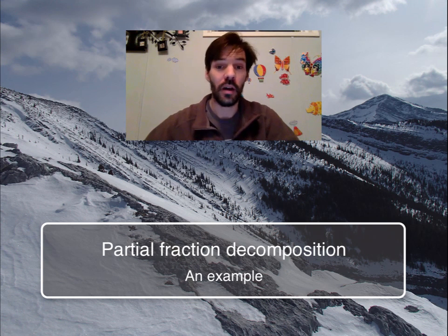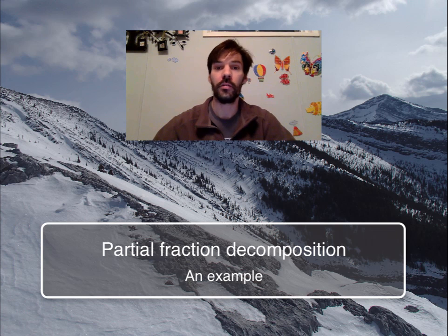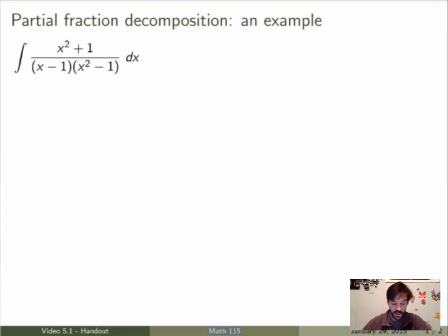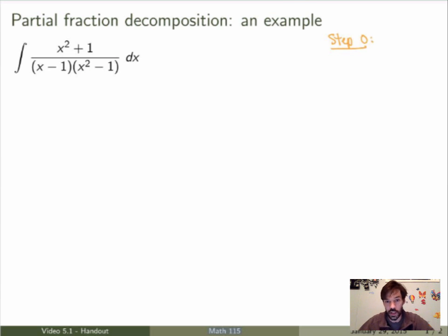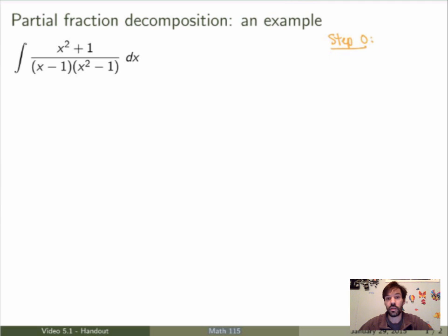Let me work through an example of how we can use partial fraction decomposition to evaluate the integral of rational functions. The first thing you should do — Step 0 — is to make sure that the rational function is proper. Proper means the degree of the numerator is less than the degree of the denominator. If it's not proper, use long division to rewrite it as a sum of a polynomial and a proper function. Here the degree of the numerator is 2 and the denominator is 3, so it is proper. We can use partial fraction decomposition right away.